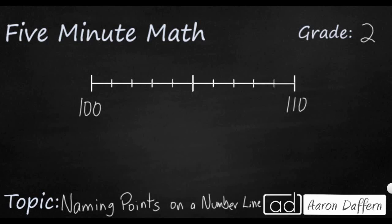If I wanted to find the spot where 104 would go, let's see if we can find 104. Well, starting at 100 we're just going to count by ones: 101, 102, 103, here's my 104, so that's where that would go.